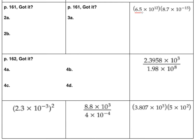For this problem, 6.5 and 8.7, these two are written in scientific notation and we're multiplying them. So I can just multiply 6.5 and 8.7 and then work with the exponents on the 10.